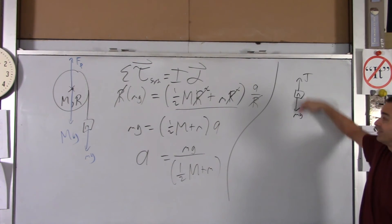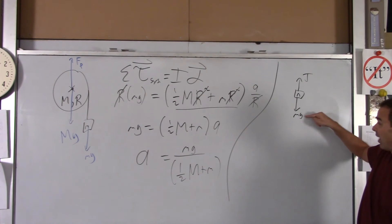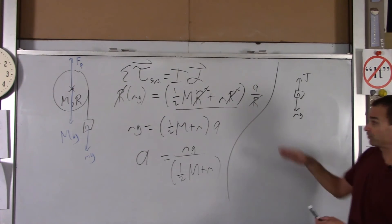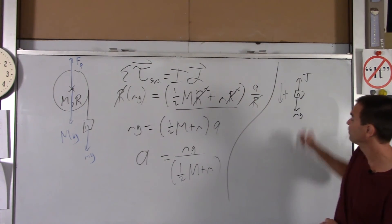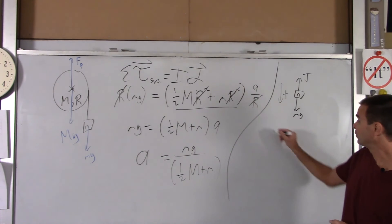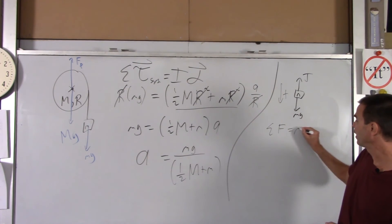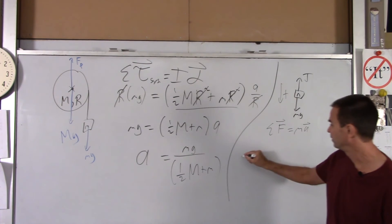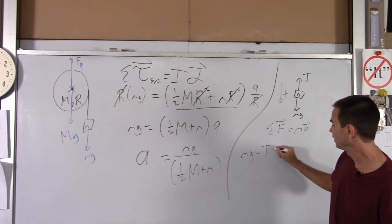And by the way, quick note, would the tension be more, less, or equal to little mg? Well, this dude's accelerating down. So the downward force has to be bigger than the upward force, or tension's got to be less than little mg. And also, because he's moving down, you make down positive.